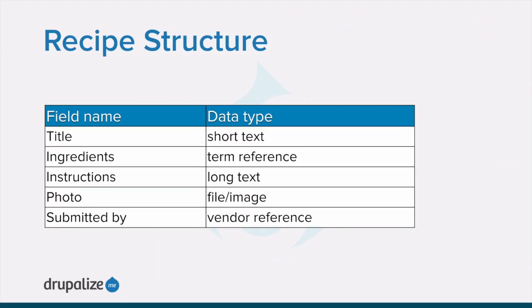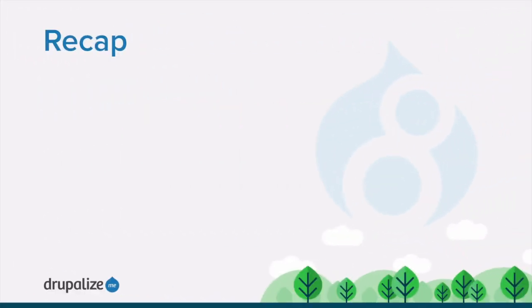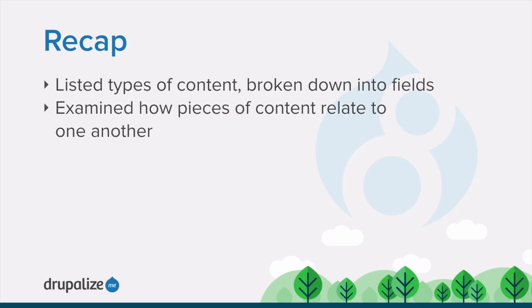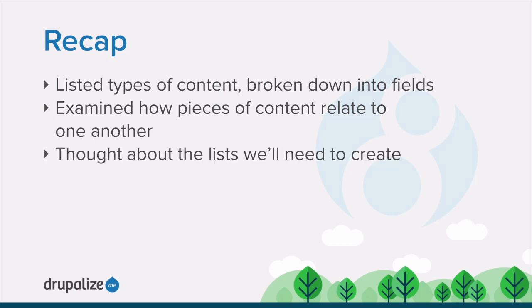Combine all of your brainstorming about different types of content, lists, and how you would like the data on your site to be structured into a document that you can refer back to later while building your site. In this tutorial, we went through examples of the types of things you'll want to keep in mind when creating a plan for the structure of your site's data: what kind of content do you want to collect and display, how does that content relate to other content on your site, what form fields do you want to present to a user who is adding or editing content, and how will that content be used in lists throughout your site. As you learn more about how Drupal functions, make sure you come back to your original document and reconsider your previous decisions, making updates as necessary.